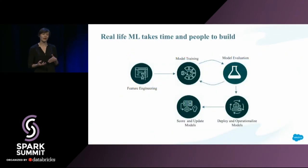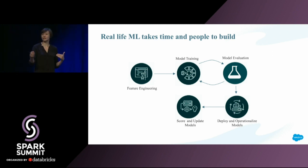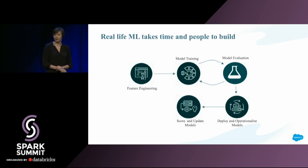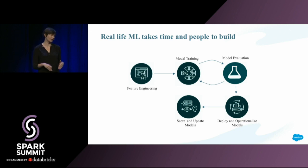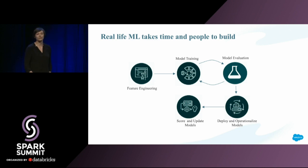If you break down how building machine learning applications typically works, you start with feature engineering, which any data scientist will tell you is 80 to 90 percent of the work — basically going through your data and finding good features for your use case. Once you've done that, you feed your features into a model, evaluate it, decide it's not good enough, and try a different model or add new features. You go through this loop a couple of times and eventually get to deploy your model, which may involve handing it off to rewrite in another language. This requires a lot of time and effort.